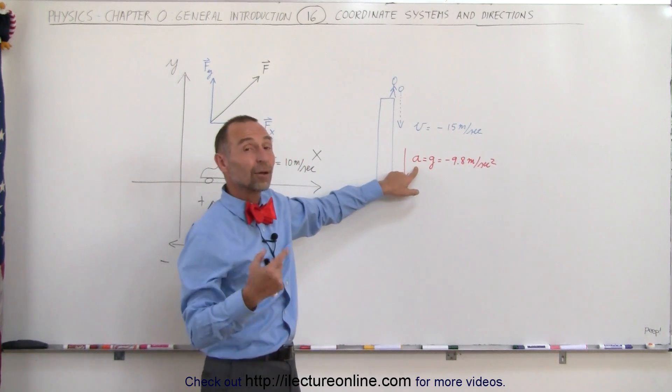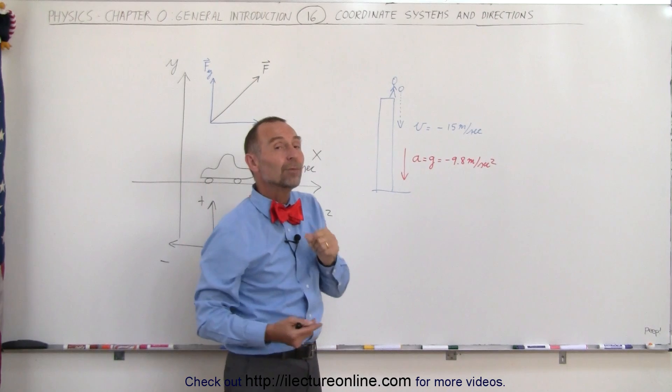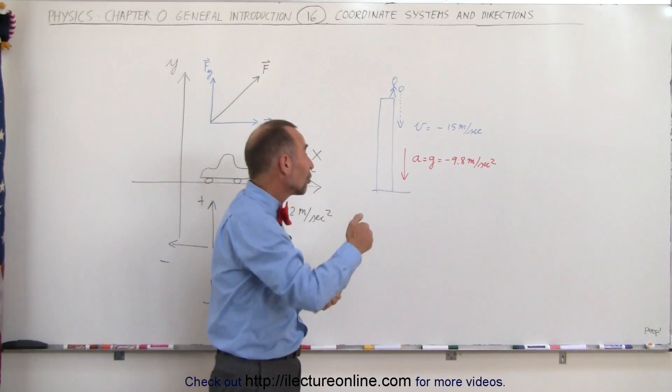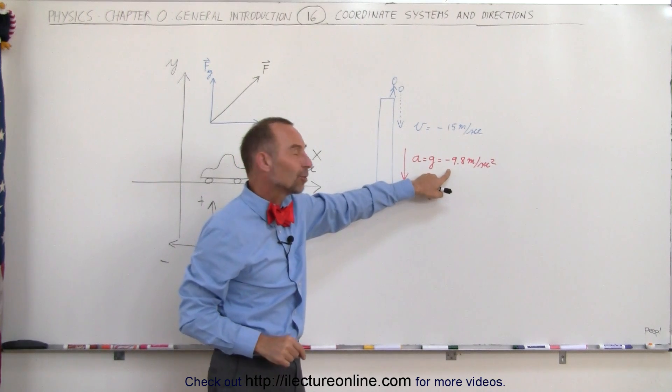Also notice that the acceleration will be equal to the acceleration due to gravity, which is 9.8 meters per second squared. But since the direction is downward, we consider that to be minus 9.8 meters per second squared.